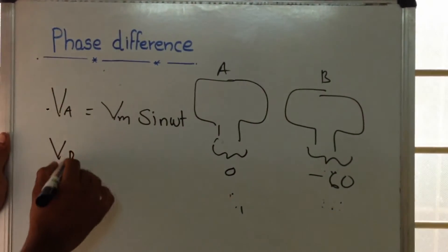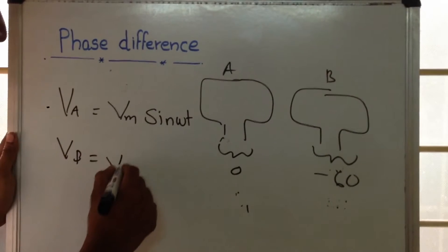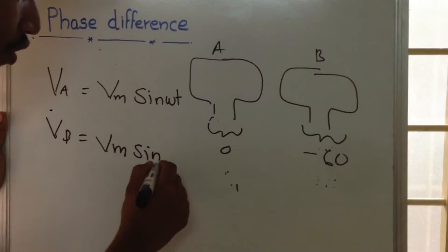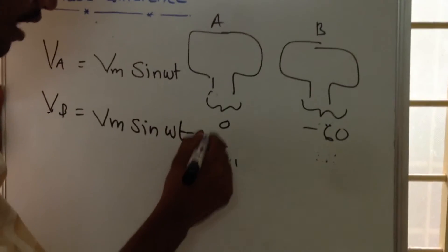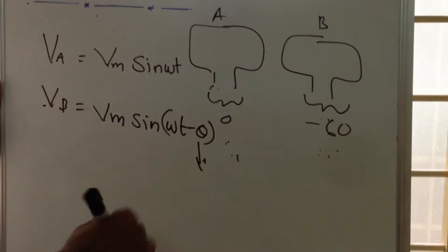In mathematical representation, we will write it as VB = Vm sin(ωt - θ). So this θ is called phase difference.